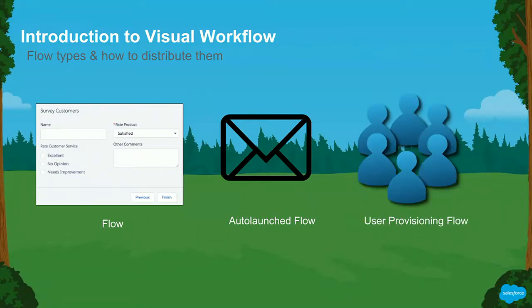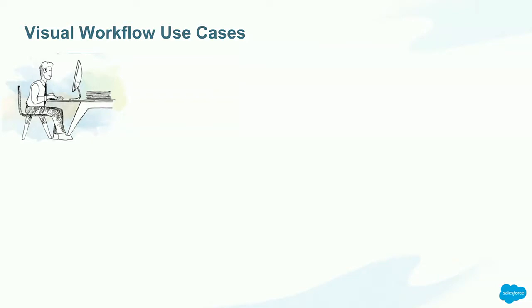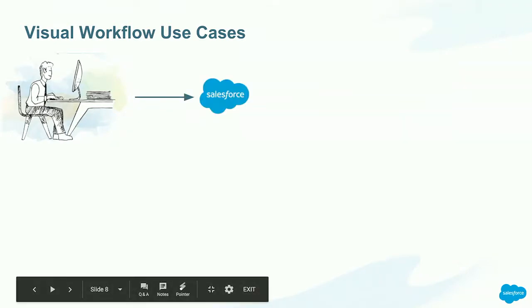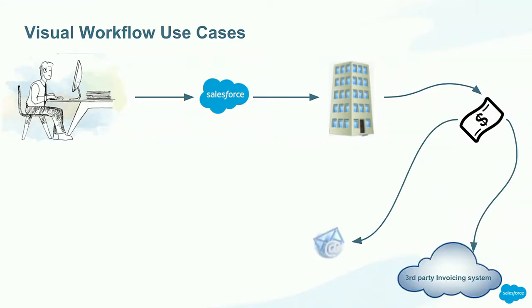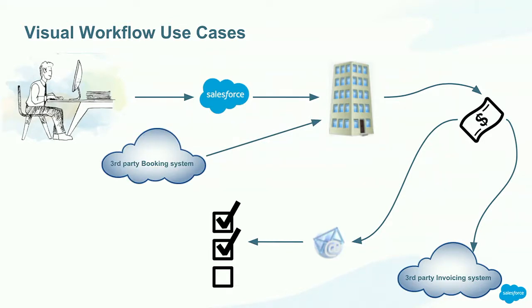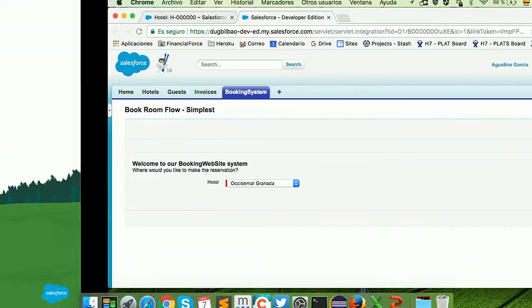We also have a third type called user provisioning flow, which is used to provision users to third-party apps, but we are not going to talk about that one today. So this is our use case: as a user, I would like to book my hotel room via Salesforce so that I don't need to go to an agency. When I leave the hotel and pay, I want to get an invoice and also receive a survey to collect my feedback. Finally, we have a third-party system that also wants to use our flow for booking rooms. We will start with the booking rooms part.